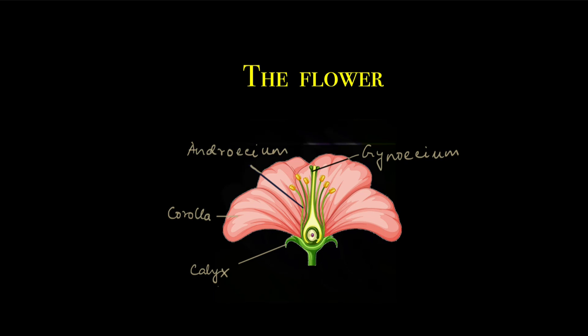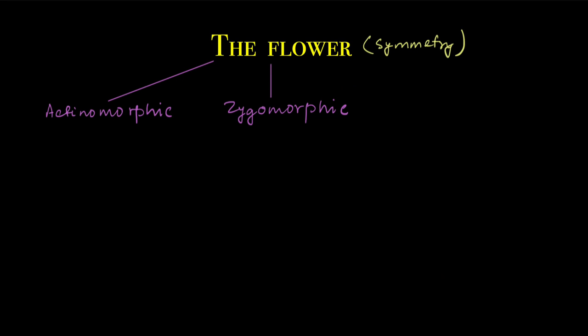All of these different parts play a very important part in reproduction. All these different parts of the flower rest on a basal structure called the thalamus. The way in which all these parts — the sepals, the petals, the stamens, and the carpels — are arranged on the thalamus may be symmetrical or asymmetrical.